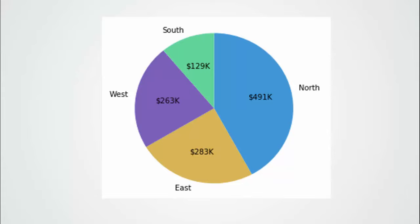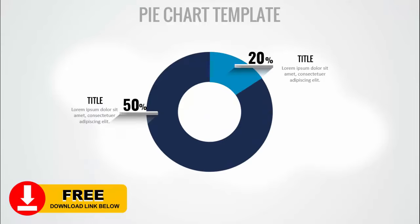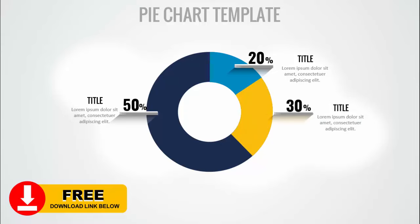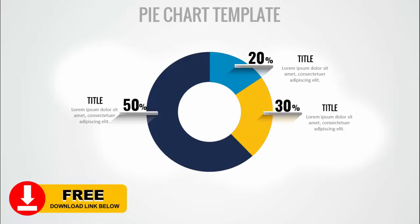Whenever we have been told to create a pie chart, we end up creating a normal and common one. Instead, why can't we do something more creative? This is how the creative pie chart will look — with 50%, 20%, 30%, and 10% sections, each with detailed text. You can see the difference between the standard version and this one.